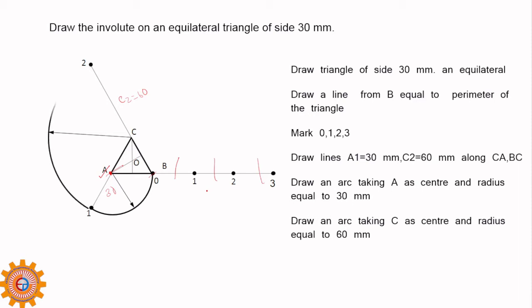Now this is another arc. This arc will adjoin with the first arc. Like that, similarly, you have to draw another arc taking B as center and radius equal to 90. See how simple it is to draw an involute on an equilateral triangle. I hope you understood and I move on to the other involute on other polygon.